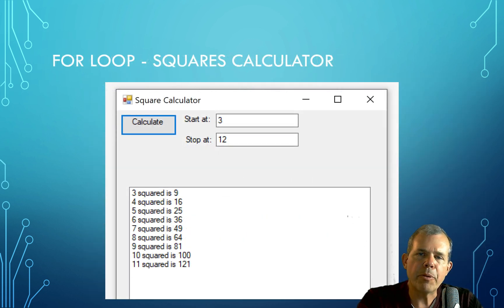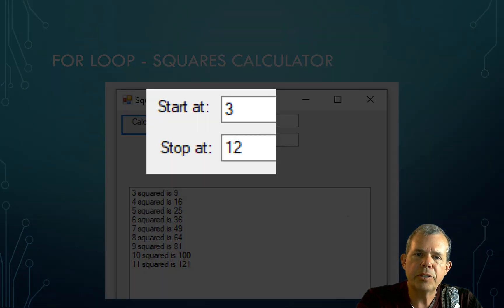The last app that we're going to do in this section is a for loop. And we're going to use a math formula for calculating the squares or the power of two of a number. And so you can see in this calculator, we're going to have a starting number such as three and a maximum number such as 12.